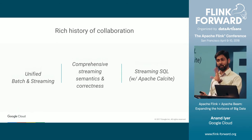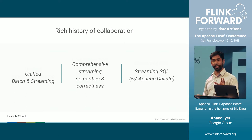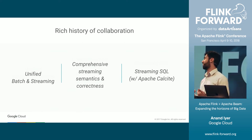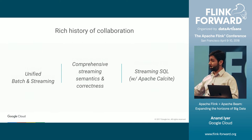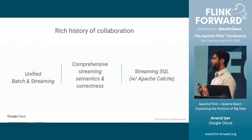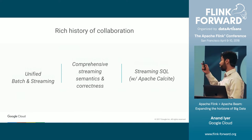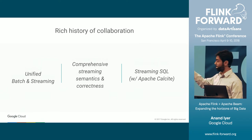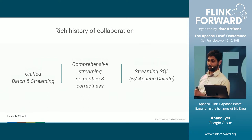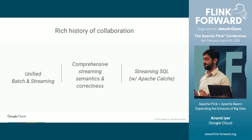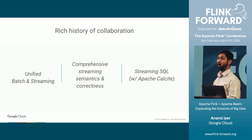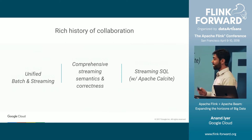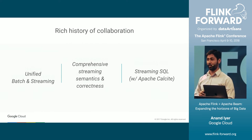Before I start talking about what the two communities are working on today, I want to take a few minutes to acknowledge the rich history of collaboration between these two communities. They have collaborated on a few concepts that have furthered the state of the art of big data processing: the unification of batch and streaming, comprehensive streaming semantics with a focus on correctness, and today they are also collaborating on extending the state of the art of streaming SQL, along with the Apache Calcite community.